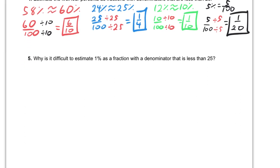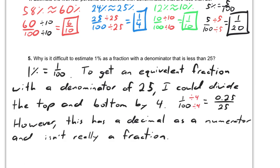Our final question is, why is it difficult to estimate 1% as a fraction with a denominator that is less than 25? And I might say something like this. 1% is the same as 1 over 100. To get an equivalent fraction with a denominator of 25, I could divide the top and bottom by 4. So here you have 1 divided by 4, which is 0.25, and 100 divided by 4, which is 25. However, this has a decimal as a numerator and isn't really a fraction.